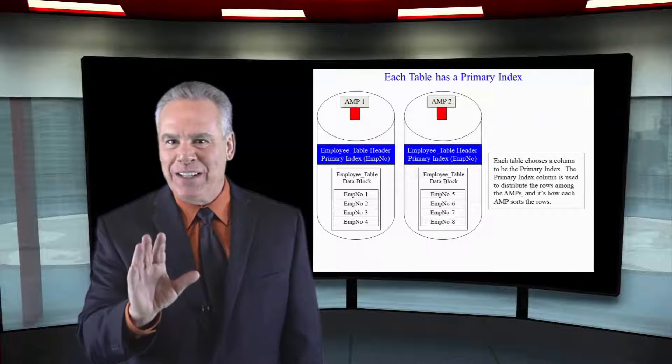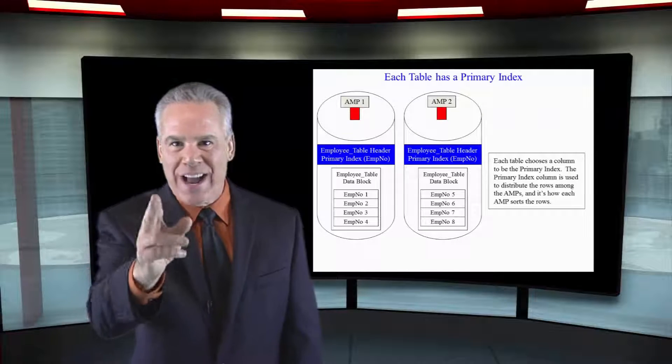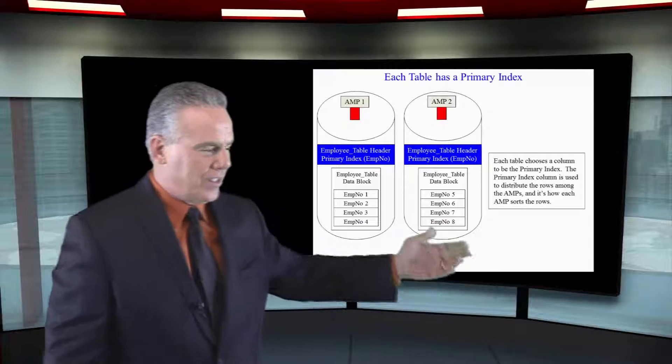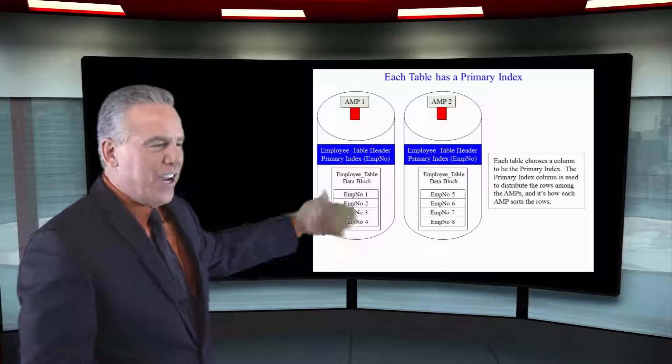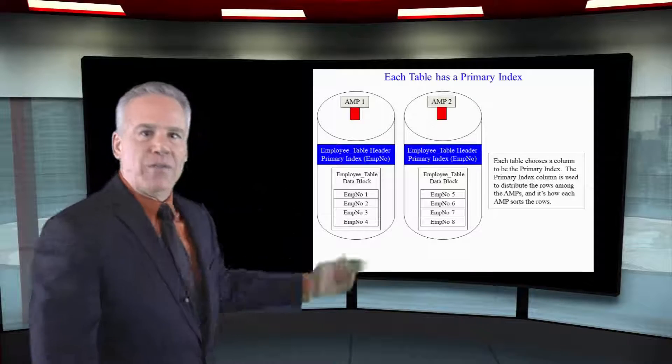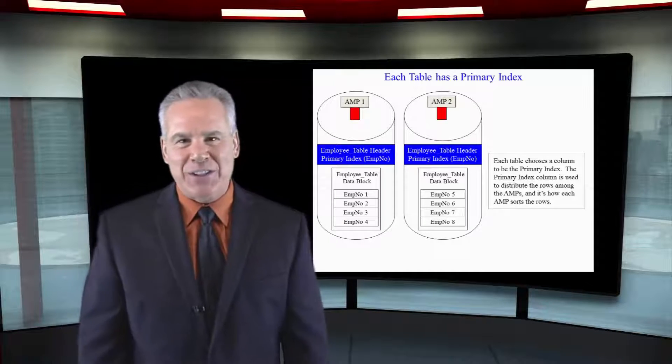This is going to really begin to add enormous value to your knowledge. Now take a look at this. Each table has a primary index. Here we have two amps and we can see that we've got their data blocks and that data is loaded.